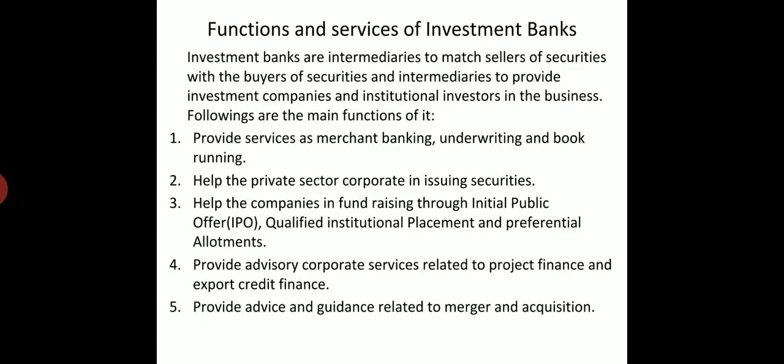If the unsuccessful portion is more than 20%, then the merchant bank is not going to take the responsibility of that unsuccessful IPO. The next function is book running, also known as the book building process.